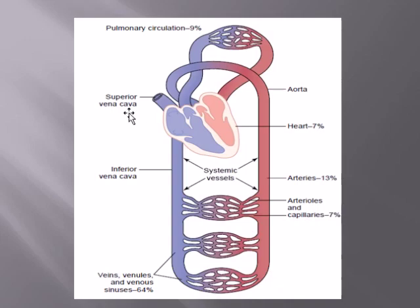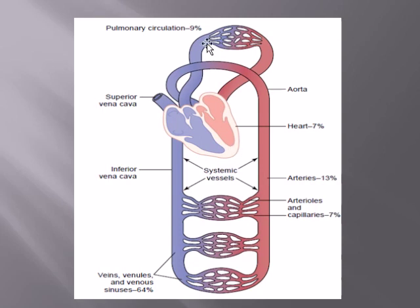As far as the anatomy of the cardiovascular system is concerned, the heart, as we have already studied, consists of four chambers: right atrium, right ventricle, left atrium, and left ventricle. And there are two types of circulations: the pulmonary circulation and the systemic circulation.